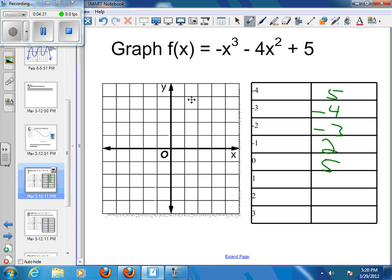Then I'm going to fill in my 1. So negative 1 cubed minus 4 times 1 plus 5. This is now a negative 1 here, and then minus 4 plus 5, which would make that a minus 5 plus 5 or a 0.